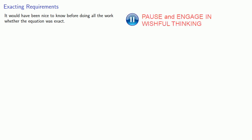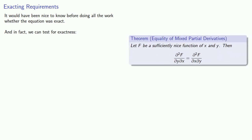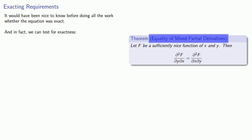It would have been nice to know before doing all the work whether the equation was exact. In fact, we can test for exactness. This relies on an important theorem from multivariable calculus: let f be a sufficiently nice function of x and y — meaning it has all the derivatives we need, and they're all suitably continuous. Then the second partial derivative of f with respect to x and then y should equal the second partial derivative of f with respect to y and then x. This is called the equality of mixed partial derivatives.